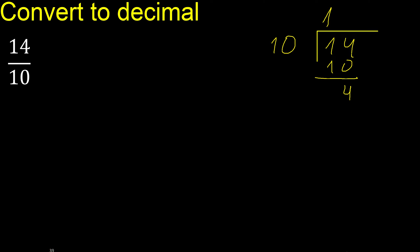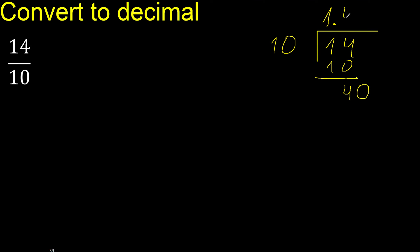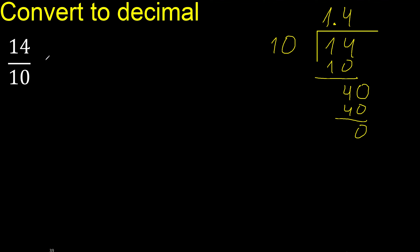Therefore complete — always complete with 0. So we have point 40. 10 multiply by which number is nearest to 40? Multiply by 4 is exactly 40. Subtract: remainder is 0. Therefore finish.